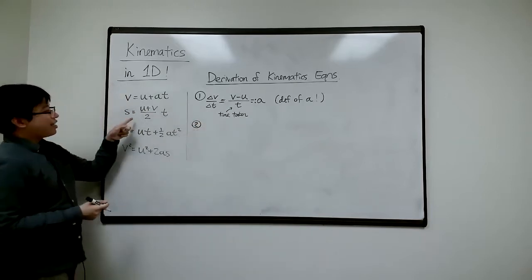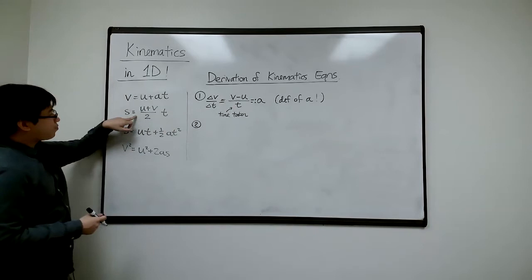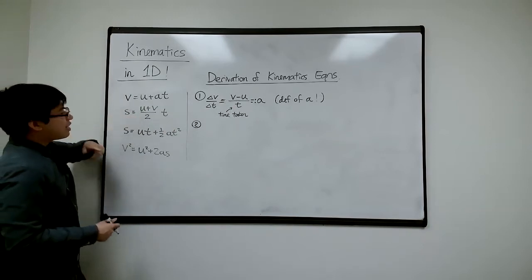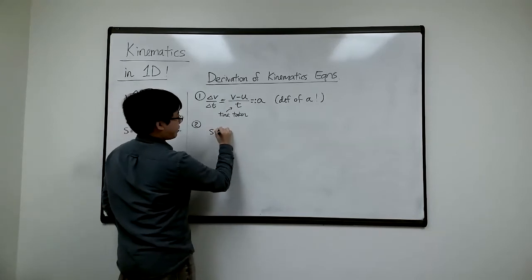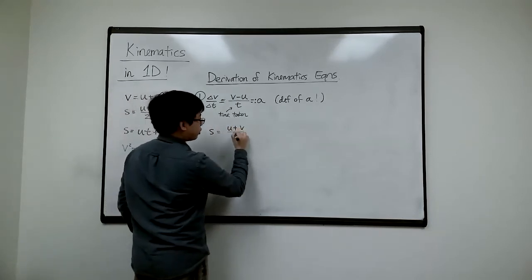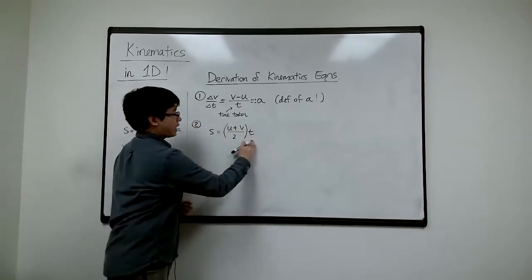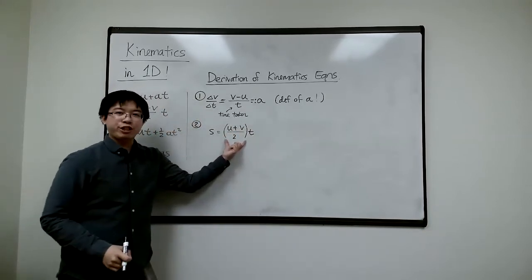Number two. Now this looks a little bit more weird. But if I stare at that, let me put a brackets around it, put a parentheses. U plus V over two times T. Put a brackets around this. What does this look like? What does U plus V divide by two?